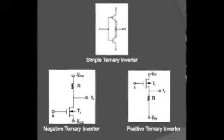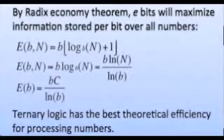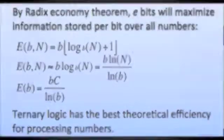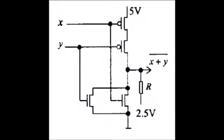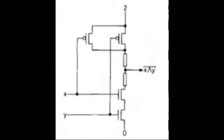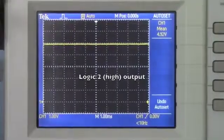The first ternary machine was developed at Moscow University in 1958 by Sergei Sobolov and Nikolai Brusentsov. It was called Setun. It can be mathematically proven that Radix 3 number systems are the most efficient for representing all numbers. In electronics, this minimizes the number of data lines required, minimizing cost and time of computation.